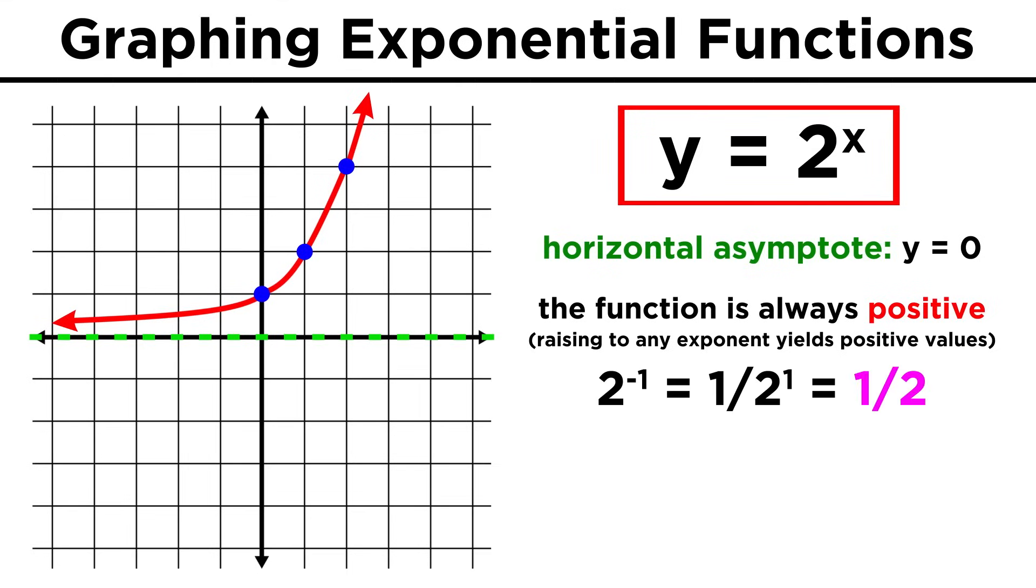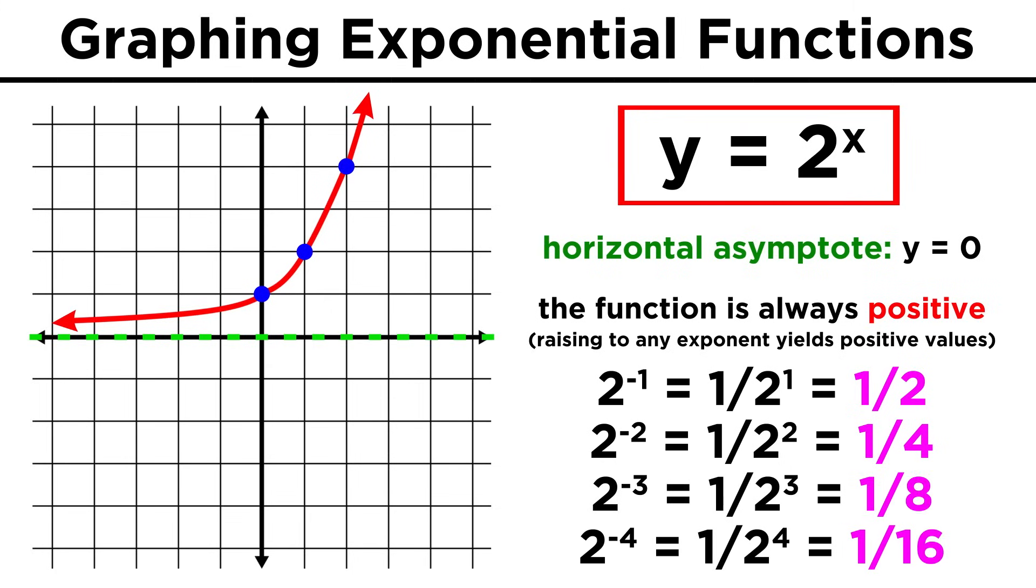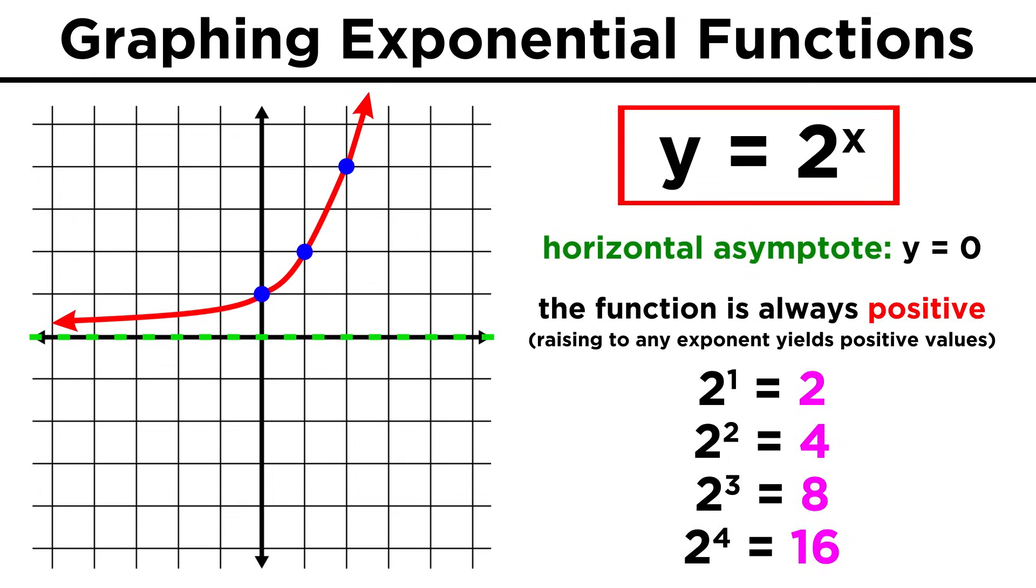Negative exponents, as we recall, still produce positive values, as two to the negative one is just one half, two to the negative two is one over two squared, or one fourth, and so on, getting closer to zero as the exponent increases in the negative direction. In the positive direction, as the exponent increases, the function approaches positive infinity.